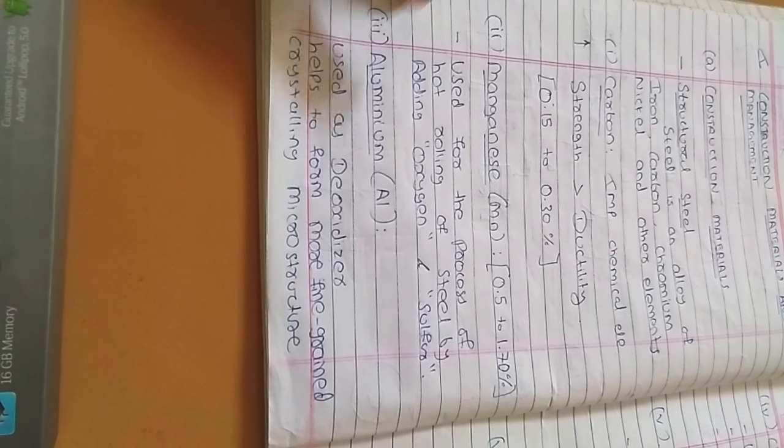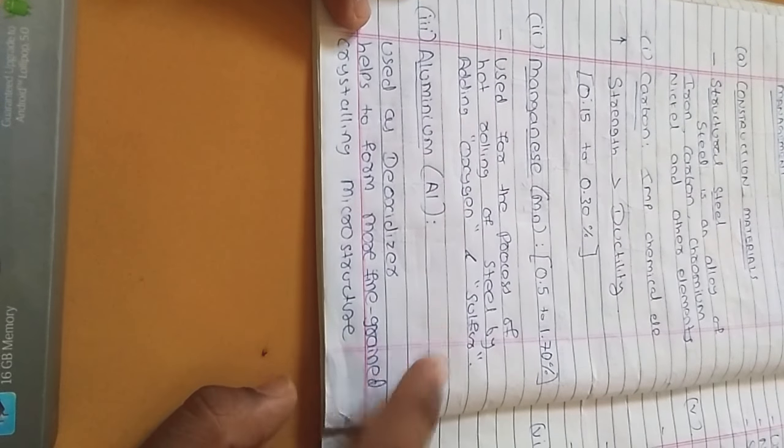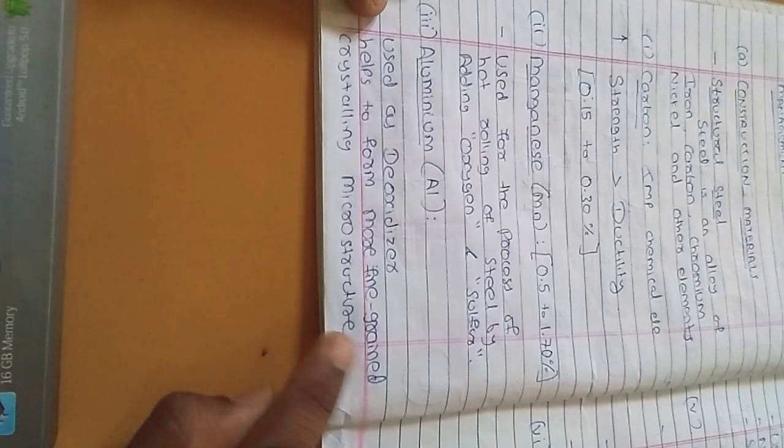Now aluminum. Where are they used? They are used as the oxidizer, helps to form more fine-grained crystalline microstructure.